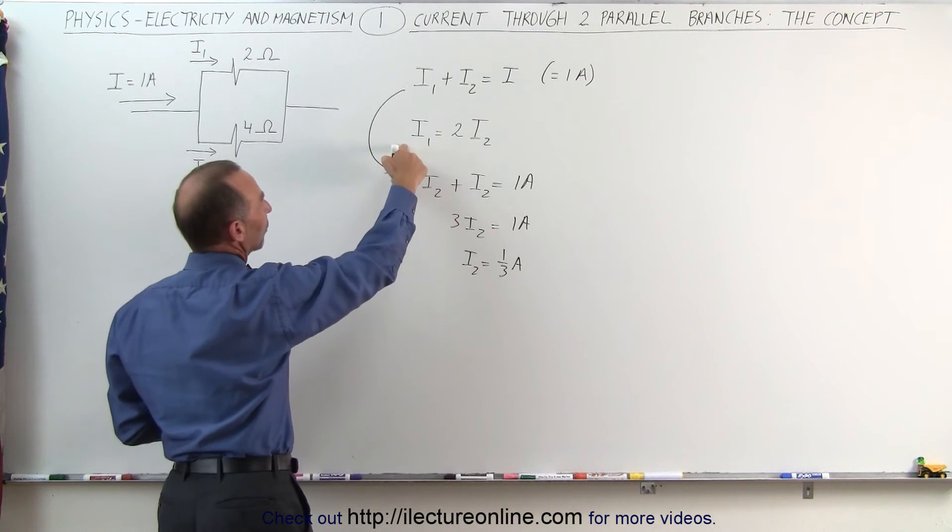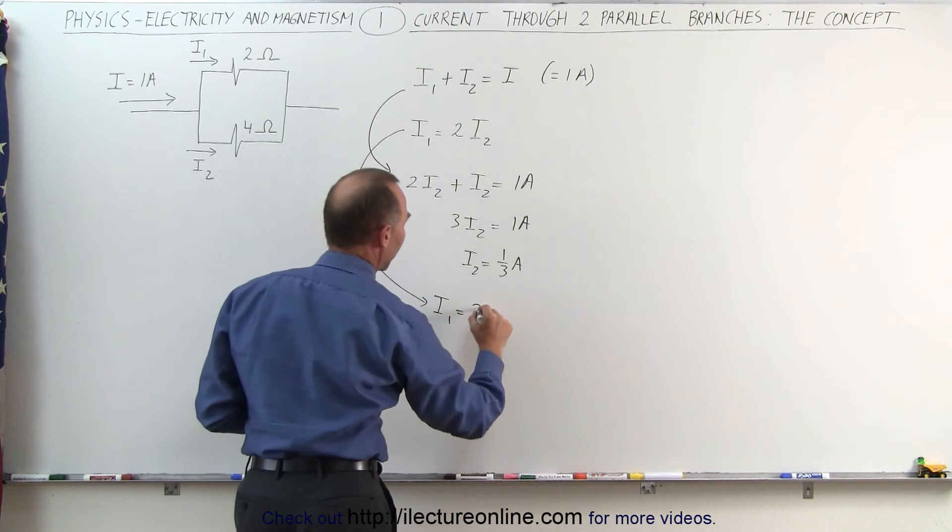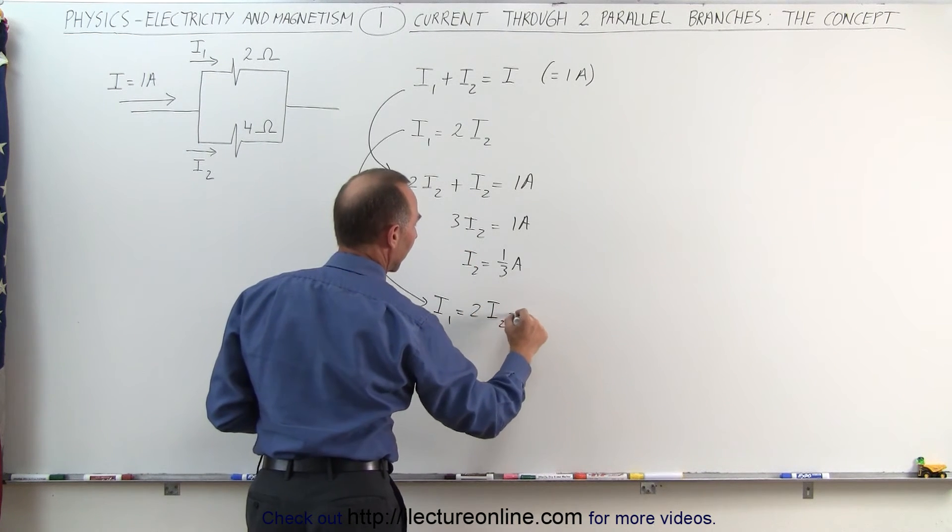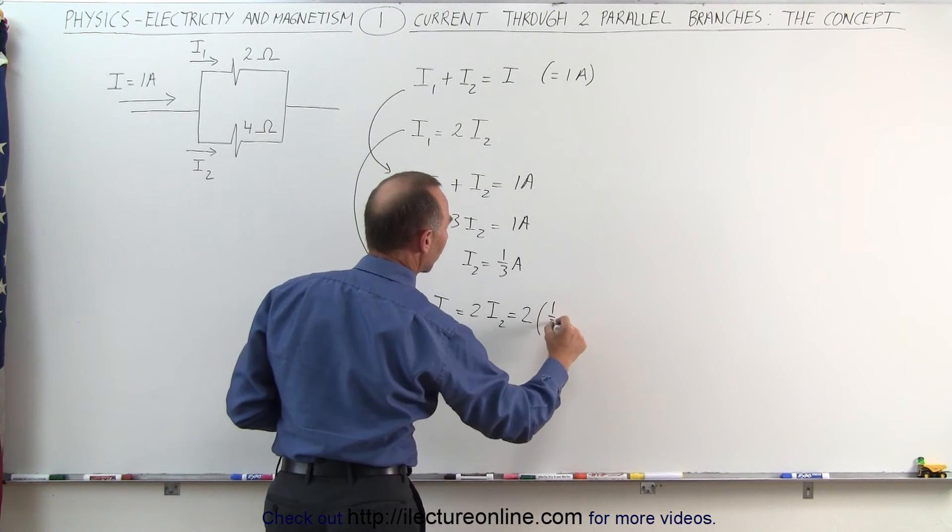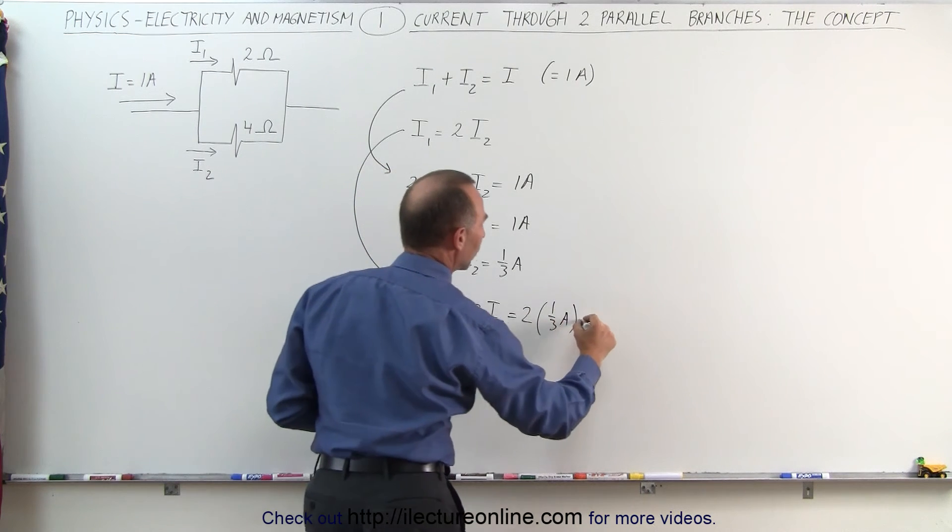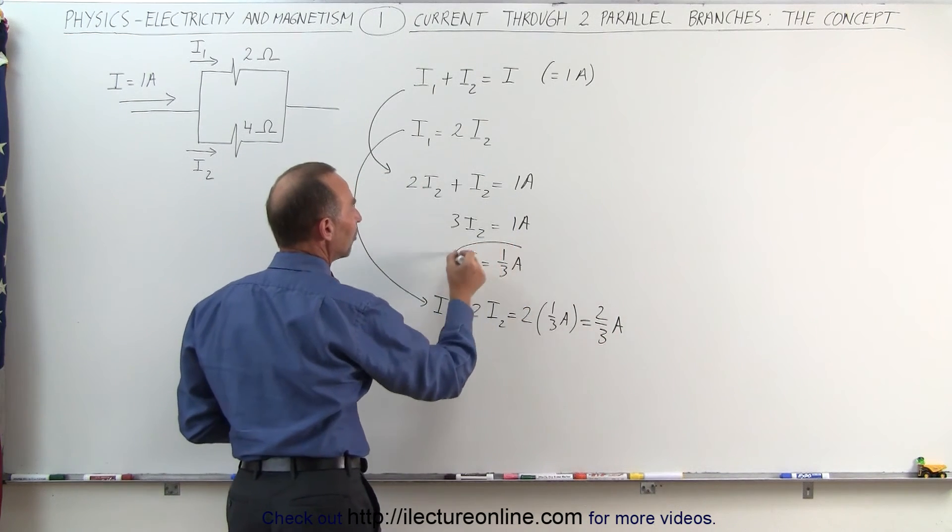Then we go back to I1, and we can write that I1, since it is equal to two times I2, and I2 is equal to one-third of an amp, this means two times one-third of an amp, which is equal to two-thirds of an amp.